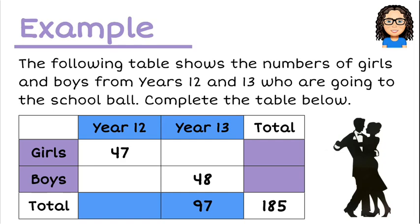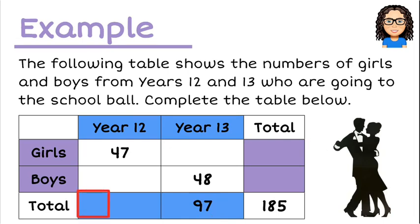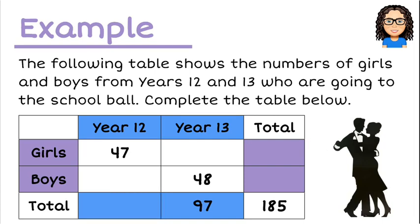Our first step is to fill in and complete the table. We know that in total there are 185 students that went to the ball — that's the total overall. We know that 97 of those 185 were in Year 13. So to work out the total number of Year 12 students, I subtract 97 from 185, which gives me 88 students. So there were 88 Year 12s in total that went to the ball.